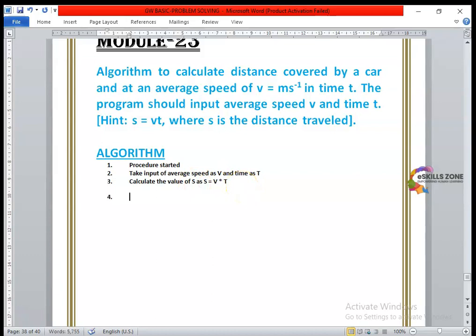The fourth step is print. Print is a keyword, statement, reserved word which is used to give the output. So we will type print and type S. S is basically the same S which is used to represent the distance. So we need to display the output. Now this has the multiplied value of V into T. So this S will be displaying the value of distance traveled by a car at an average speed of V MS⁻¹.